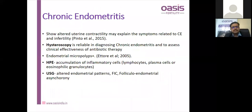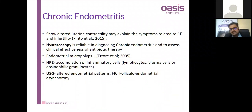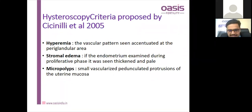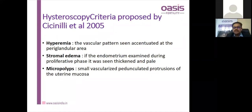Chronic endometritis is another important consideration alongside poor endometrium cases. Its diagnosis is an enigma — it cannot be detected on routine diagnostic and imaging testing. Hysteroscopy is required using the Cicinelli et al. classification, where the triad of hyperemia, strawberry appearance, and micropolyps can be seen. This triad is helpful for the diagnosis of endometritis, and antibiotics can be given per culture results.